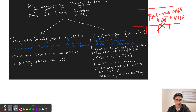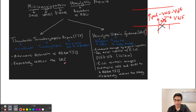This process preferentially occurs in the central nervous system in these patients. It can also occur in the kidney, but it is going to preferentially affect the central nervous system.